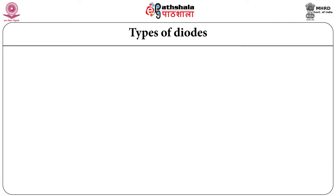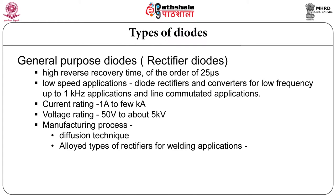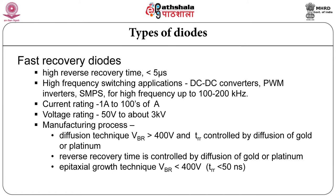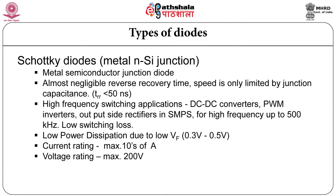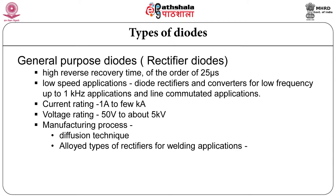According to voltage rating, current rating and reverse recovery time, power diodes are generally categorized. Power diodes can be categorized as general purpose diodes which are also called as rectifier diodes, fast recovery diode, and Schottky diode. General purpose diodes have high recovery time of the order of 25 microseconds — it is a slow device, used for low speed applications such as diode rectifiers and converters for low frequency.